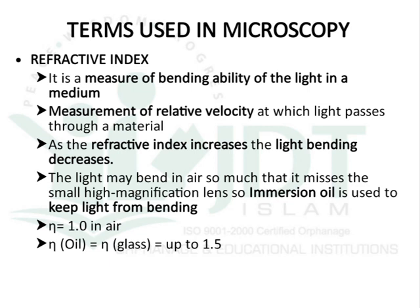The second term is refractive index — it is a measure of the bending ability of light in a medium, and can also be measured by the velocity at which light passes through the material. As the refractive index increases, the light bending property decreases. Light may bend in air so much that it misses the small high-magnification lens. If we do not use oil in oil immersion, the light will not enter the objective lens and will not focus on any object. The refractive index of air is 1 and the refractive index of oil is 1.5.